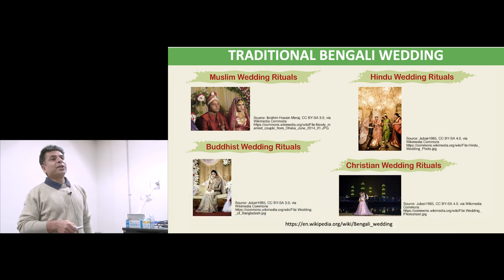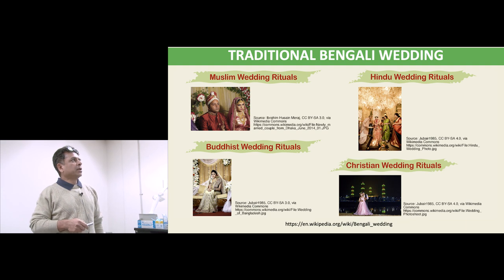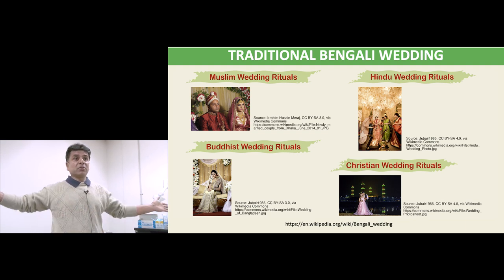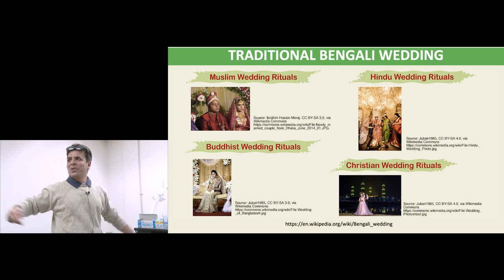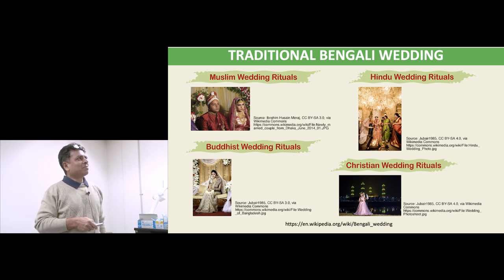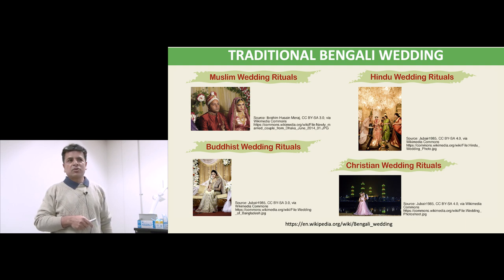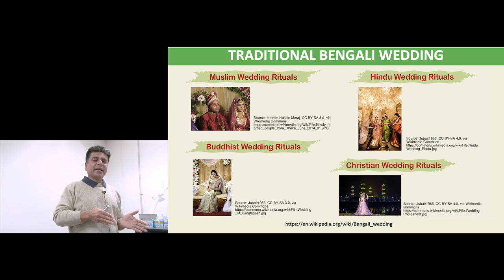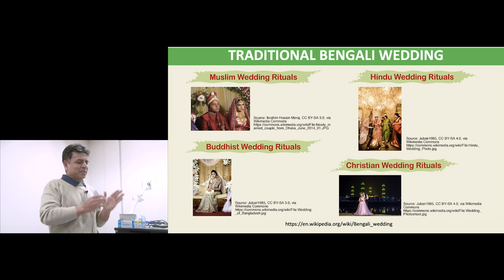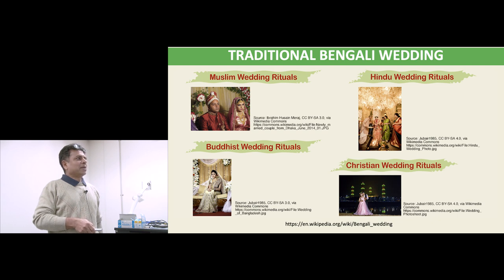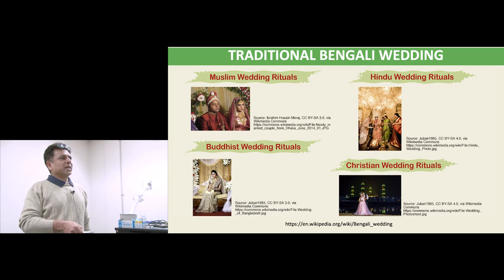For traditional Bengali weddings — this is a Muslim wedding. The women wear different kinds of sari, a long cloth about 20 feet long. They use natural leaves to make colorful hand decorations. Marriage ceremonies usually take several days. This is a Hindu wedding where they are performing some prayers and wearing traditional dresses. And this is a Buddhist wedding, and this is a Christian wedding.